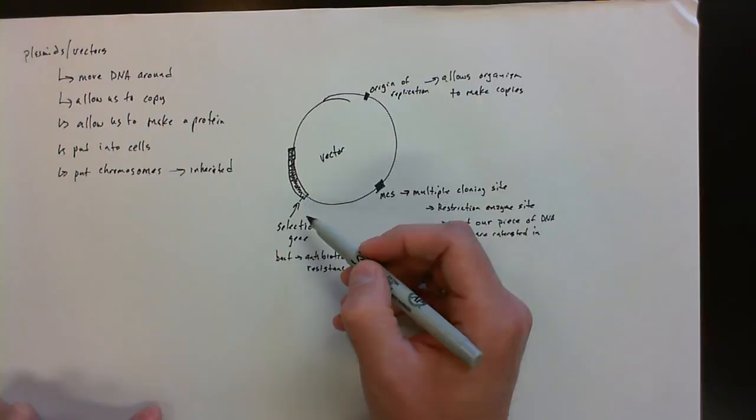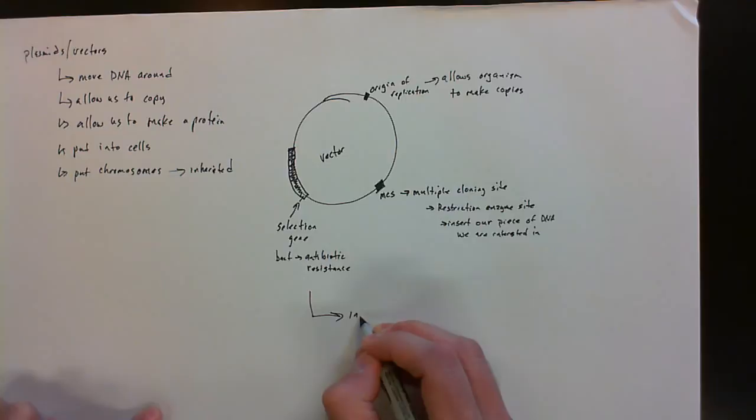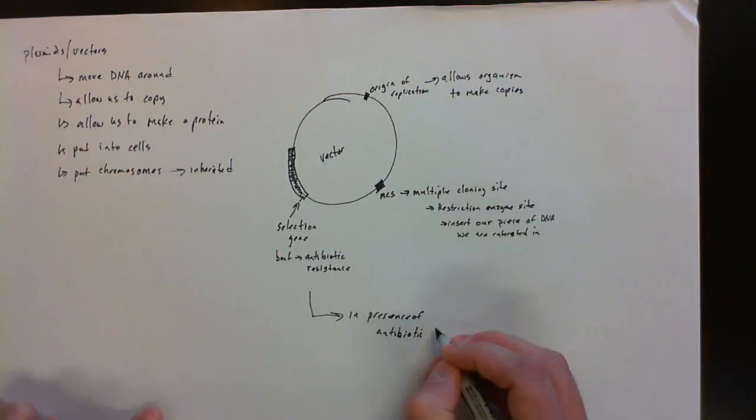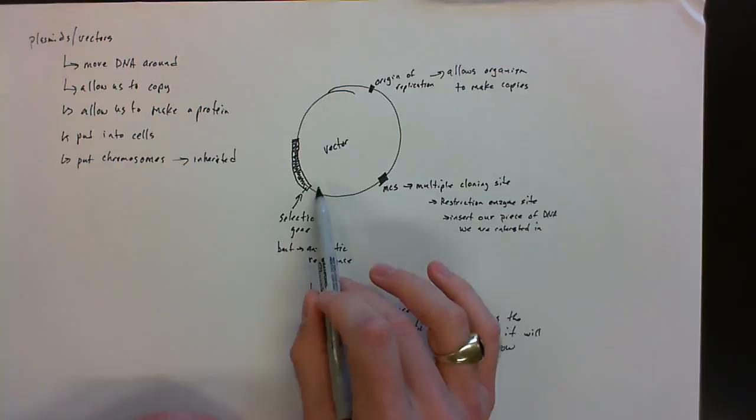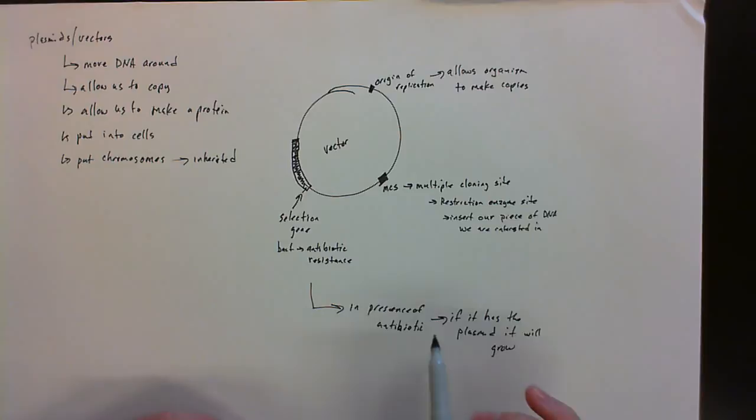So one way of looking at this is in presence of antibiotic. This may be ampicillin, penicillin. So when I have my vector, and my bacteria have the vector with the selection gene in it, so when I put that bacteria in the presence of an antibiotic, only the bacteria that have the plasmid will grow.